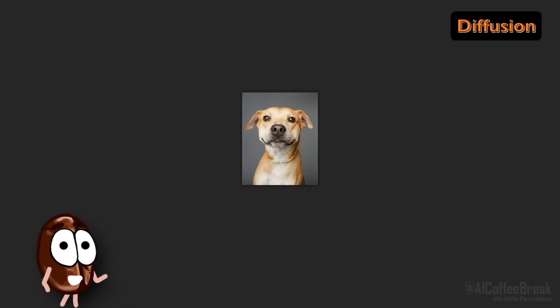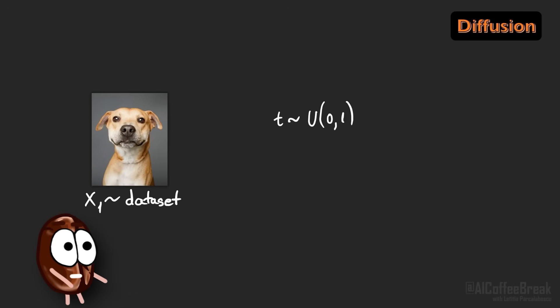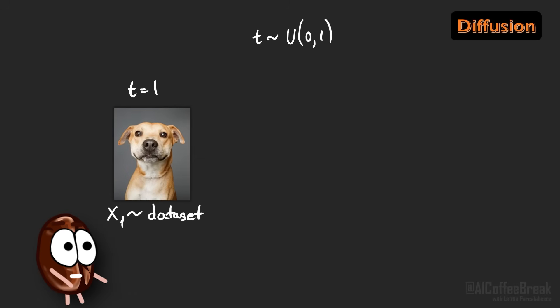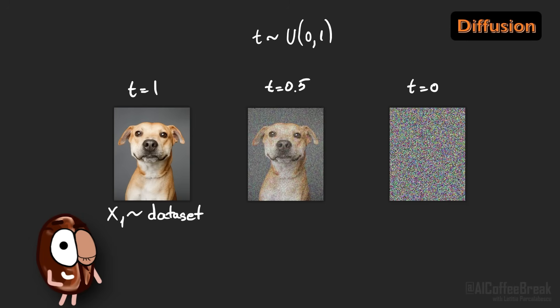First, we take a real image from our training dataset, let's call it x1. Then we pick a random time step t between 0 and 1, where t equals 1 stands for a clean image with no noise, t equals 0 stands for an image with just noise, and we call it 0 because it contains 0 information. And t between 0 and 1 stands for something between noise and no noise. So that's what the time step t represents, how far along we are in the noising process.